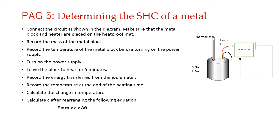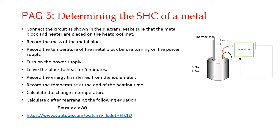E is the energy transferred, which the joule meter gives you. M is the mass of the metal block, which you found initially. And Δθ is the change in temperature — final minus initial. Now, regarding accuracy: we have assumed all heat from the heater went to the metal block, which is not ideal. In the diagram there is no insulation, so heat is definitely lost to the surroundings, which makes our calculated value of specific heat capacity inaccurate.